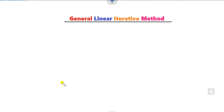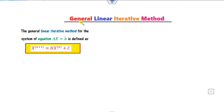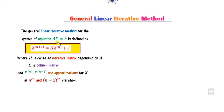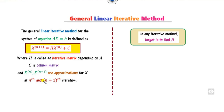What is the general form of the iterative method? The general linear iterative method for a system of equations has the form Xₙ₊₁ = H·Xₙ + C, where H and C are matrices depending on A and B. H is called the iterative matrix, which depends on matrix A, and C is the column matrix depending on B. Your basic target is to identify H; once you know H, the respective method is named accordingly.